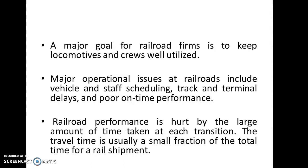The travel time is usually a small fraction of the total time for a rail shipment. For example, if a goods train operates from Chennai to Delhi, due to various reasons such as track congestion or staff changeover — where one crew goes for rest and another crew takes duty — this transition takes a lot of time. So the total travel time is just a fraction of the total time for a rail shipment.